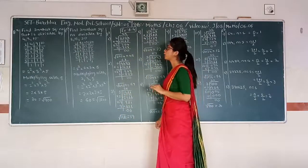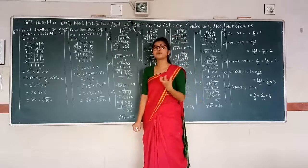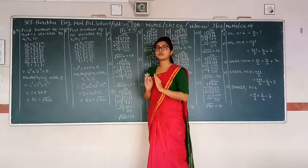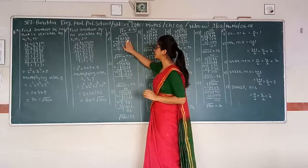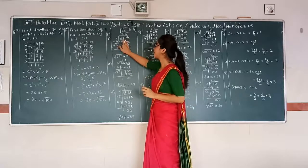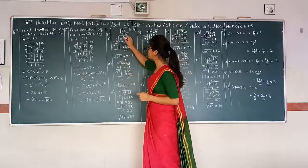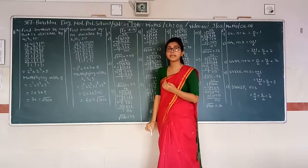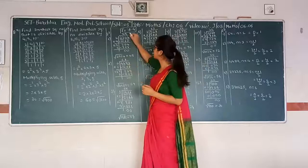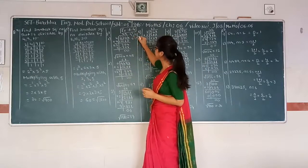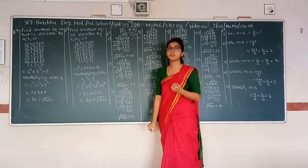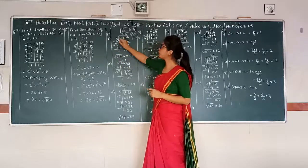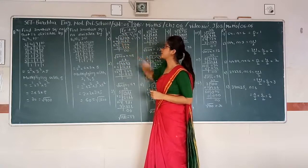We will go to Exercise 6.4, Question number 1. We have to find the square root of 2304. We divide 2304 into pairs starting from the right side: 04 and 23. First, we consider 23. We find which perfect square is nearest to 23: 4 squared is 16 and 5 squared is 25. Since 25 is bigger than 23, we take 4 squared which is 16. We write 4 above; 4 goes into 23, giving remainder 7.